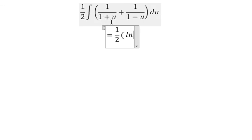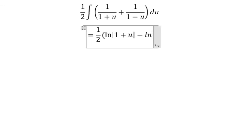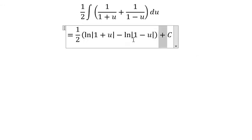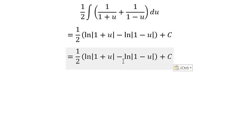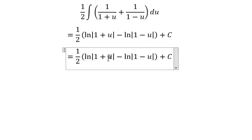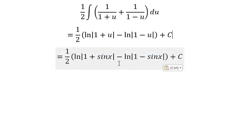The integral of 1 over (1+u) you will get natural log of absolute value of (1+u). Because we have a negative sign for u, we have negative ln(1-u). Now u we need to change back for sinx. And this is the final answer. That's the end, thank you for watching.